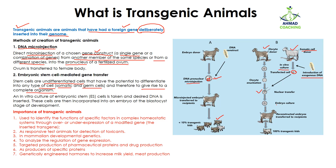We then allow this ovum to develop into an embryo culture, and after that we place this embryo into the female body. The female is then going to give birth to transgenic offspring. This is how you can use stem cells to make transgenic animals.